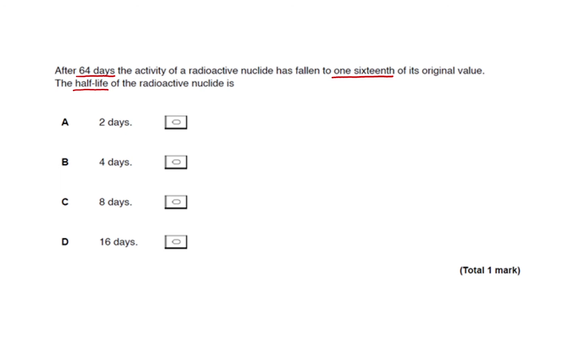For the initial activity of the sample, let's say it has a numerical value of 1 Becquerel. After one half-life, it drops by half, so we divide this by 2. We need to divide by 2 again after another half-life has gone by.